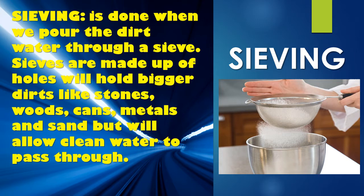Things like stones, wood, and all those things that are not good will stay on top of the sieve we are using. Then as we are sieving it, the good part will pass through. Metals and sand are held back while we allow clean water to pass through. The dirty part stays on the sieve object while the clean water goes down.